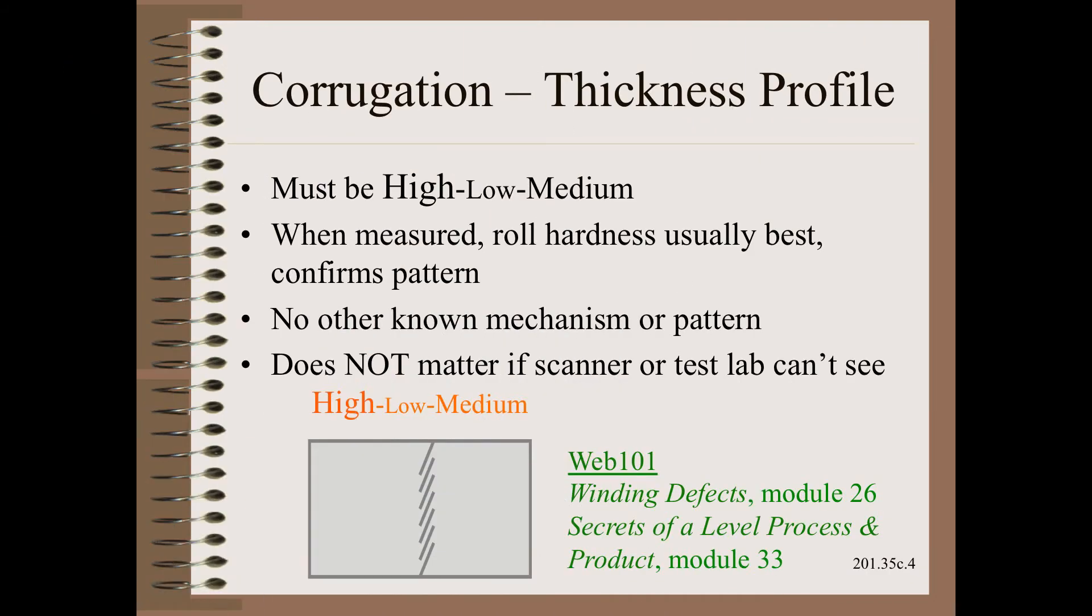True, the corrugation is a tight defect, specifically a nip-induced tight defect. Sticking to our theme of profile, however, we know that the thickness must be high-low-medium. It does not matter whether we can pick it up on our scanners or test lab or other instruments. Often, they are not good enough for that purpose. It does not matter whether it is the best we can do in terms of level. The wound roll has made a quite different judgment. It is not good enough.